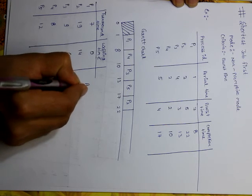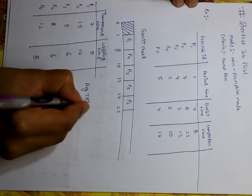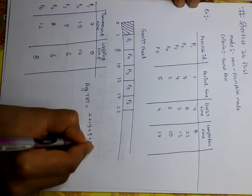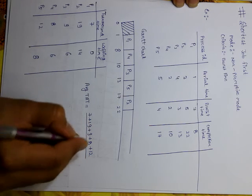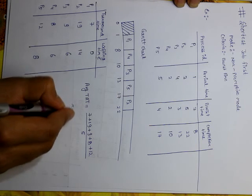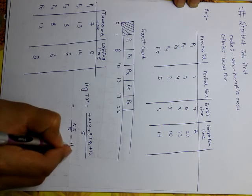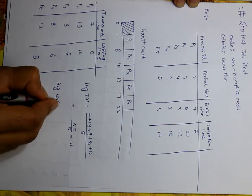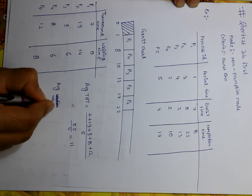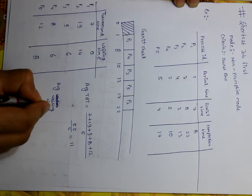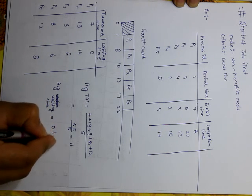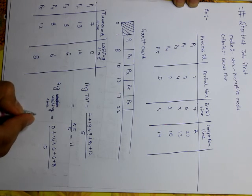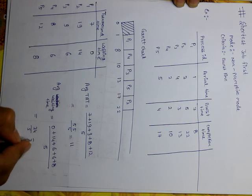Now we are going to calculate the average turnaround time, which is 7 plus 19 plus 9 plus 8 plus 12, divided by 5. The average turnaround time is 55 divided by 5, that is 11. The average waiting time is 0 plus 14 plus 6 plus 6 plus 8, divided by 5, that is 34 divided by 5, which equals 6.8.